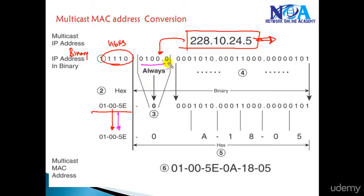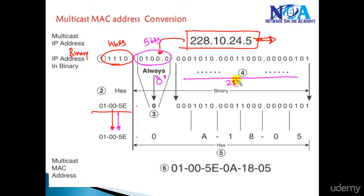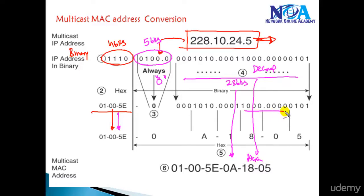In that binary format, the first four bits are always replaced with 01005E — that is standardized. The next five bits are always represented as zeros. Then whatever the remaining 23 bits are, those same 23 bits are used as part of the MAC address, converted from binary into equivalent hexadecimal format.